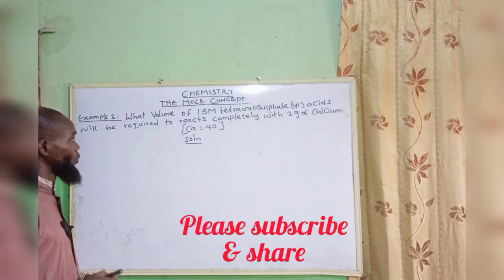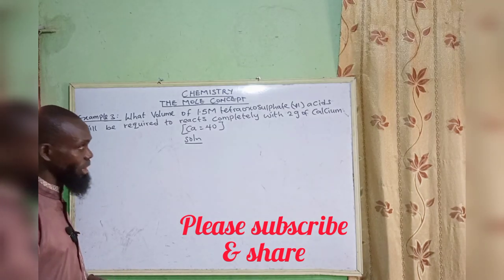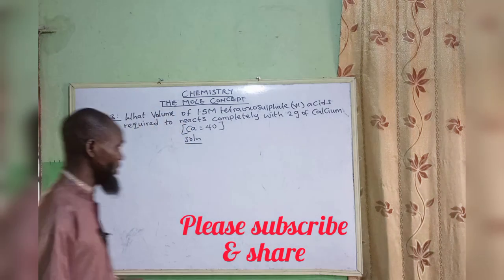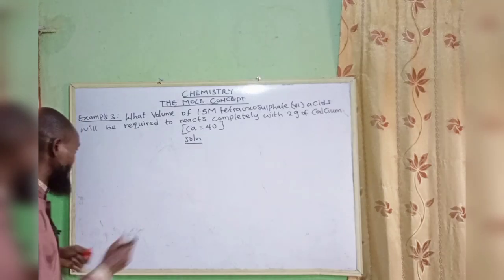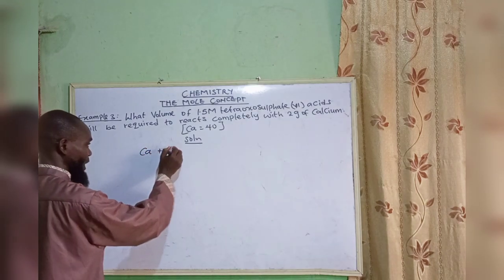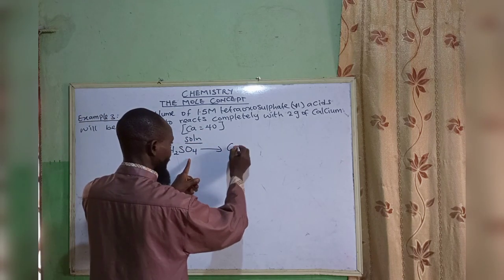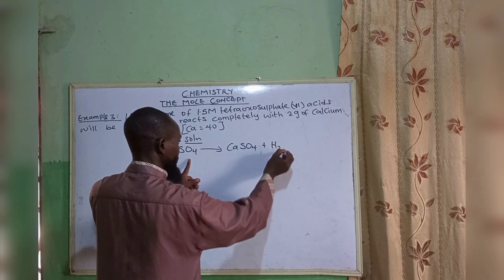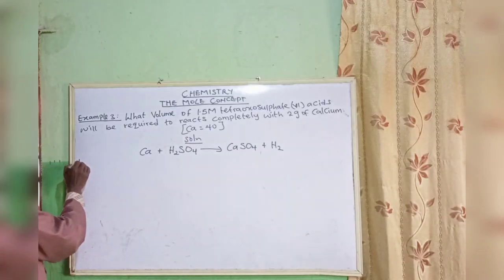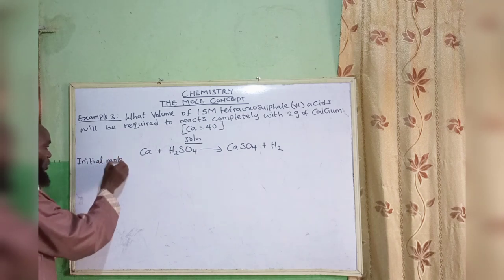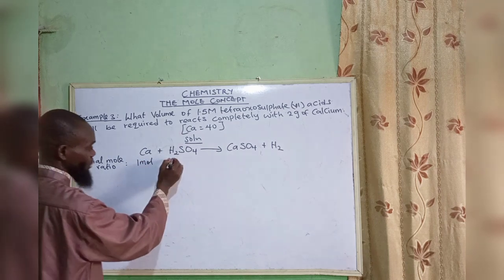Example 3: What volume of 1.5 molar sulfuric acid (H₂SO₄) will be required to react completely with 2 grams of calcium? The two substances are H₂SO₄ and calcium. Calcium reacts with H₂SO₄ to give calcium sulfate plus hydrogen. This reaction is already balanced, so the initial mole ratio of calcium is one mole and H₂SO₄ is one mole.